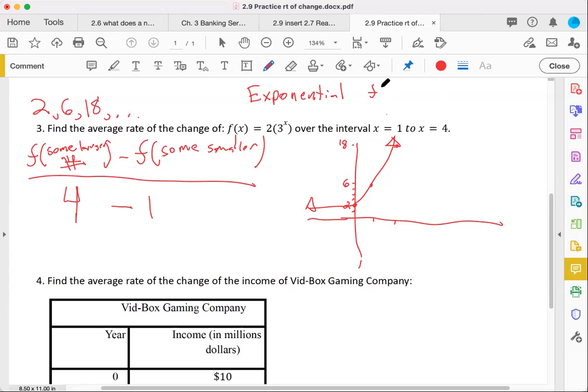So what do we need to do? We need to get f of 1, which is, again, just plugging in where x is this number 1, so 2 multiplying with 3 to the first power. So this is really just 2 times 3, which is just 6.